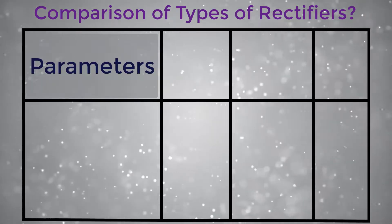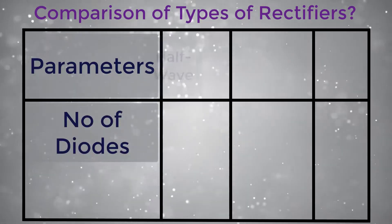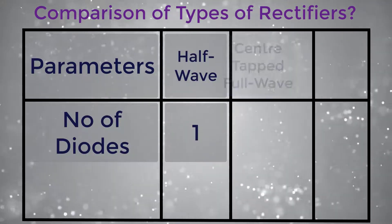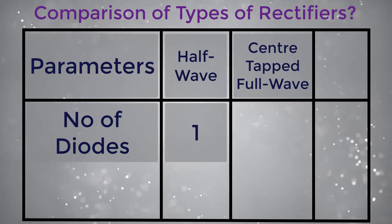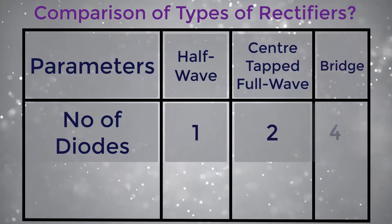Parameters: Number of diodes. For half wave it is 1, for center tapped full wave it is 2, and for bridge it is 4.